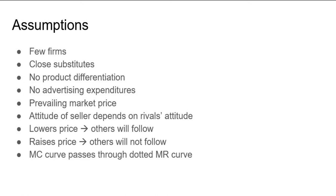There is an established or prevailing market price for the product at which all the sellers are satisfied. Each seller's attitude depends on the attitude of its rivals. Any attempt on the part of a seller to push up his sales by reducing the price of his product will be counteracted by the other sellers who will follow his move. And if he raises the price, others will not follow him.